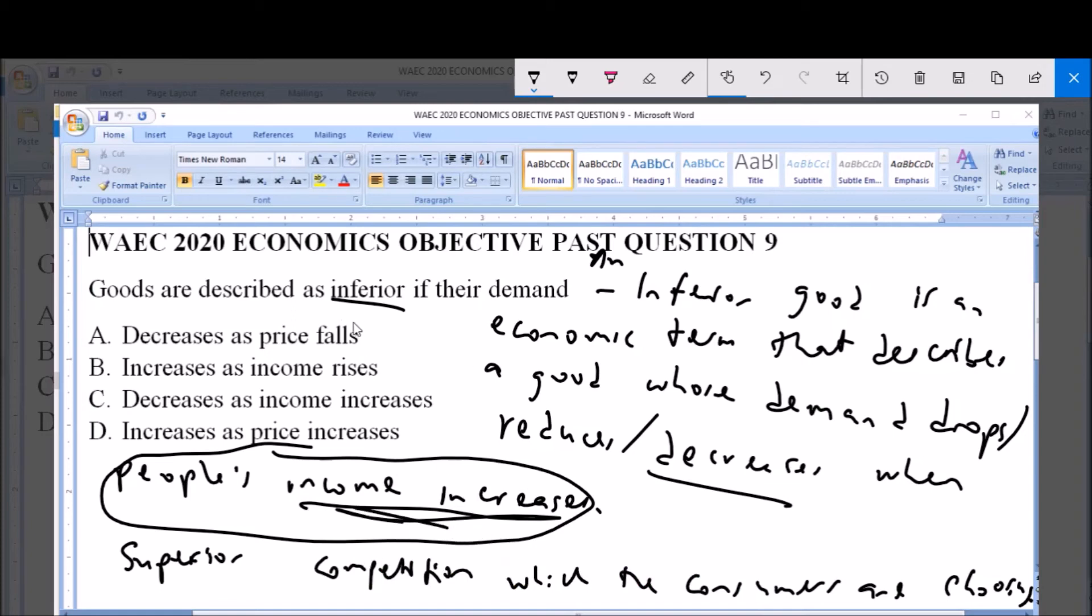So based on this description, you can see a good is inferior when its demand drops as the income of consumers increases. As we have established, a good is described as inferior if their demand decreases